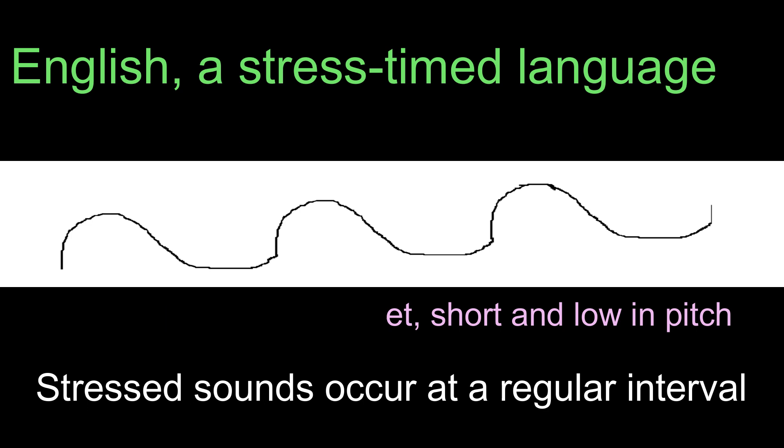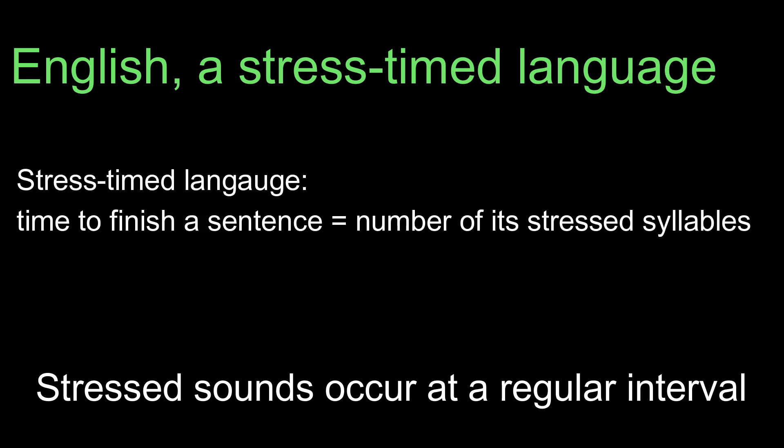Also, since stressed syllables need to occur at regular intervals of time, sentences with the same number of stressed syllables take nearly the same amount of time to say, regardless of the number of unstressed syllables that come in between. In other words, in English, the length of time to finish a sentence depends on the number of stressed syllables, not on the total number of words or syllables.